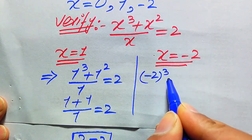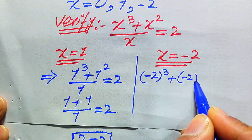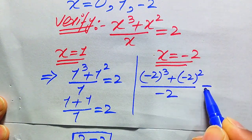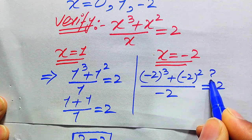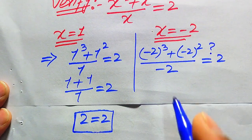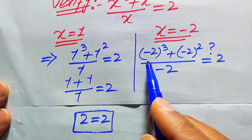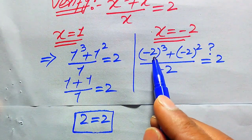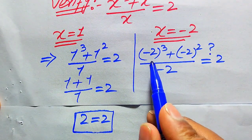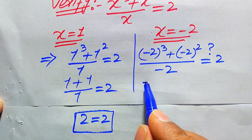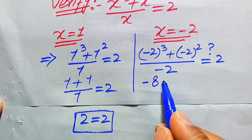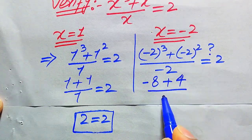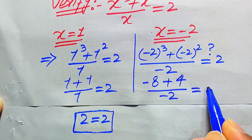When the base is negative and the exponent is even, the result is positive. So (−2)³ = −8 and (−2)² = 4. We get (−8 + 4) divided by −2, which gives −4 divided by −2.